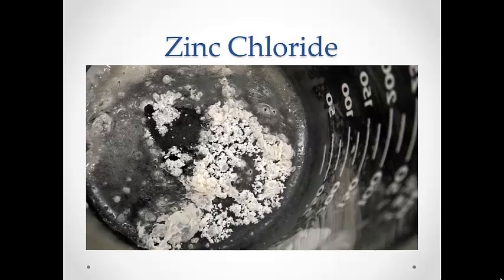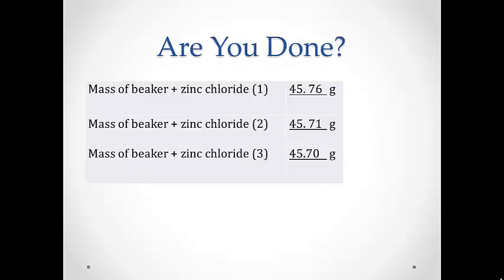Once you have driven off all the water, you will be left with a white, powdery zinc chloride. Remove the beaker from the flame and allow it to cool. When you are able to handle the beaker, find its mass. Repeat the gentle heating procedure, allow the beaker to cool again, and mass it again. If the post-heating masses are within 0.02 grams of each other, you are done. If the mass difference is more than 0.02 grams, repeat the heating procedure.